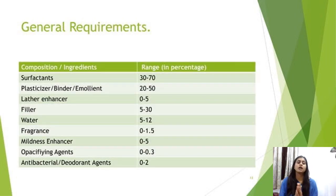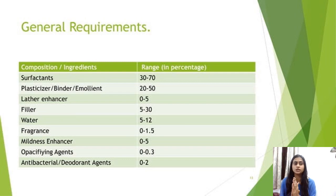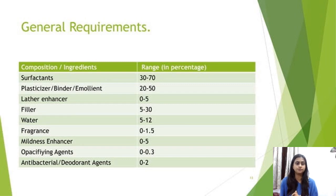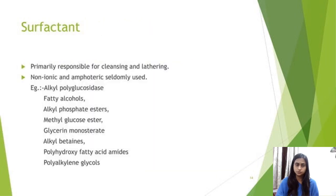The general requirements and composition of syndet bars by ingredient percentage range includes: surfactant 30–70%, plasticizer/binder/emollient 20–50%, lather enhancer 0–5%, filler 5–30%, water 5–12%, fragrance 0–1.5%, mildness enhancer 0–5%, opacifying agent 0–0.3%, and antibacterial/deodorant agent 0–2%.